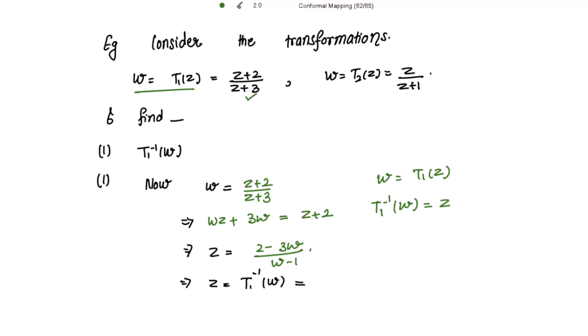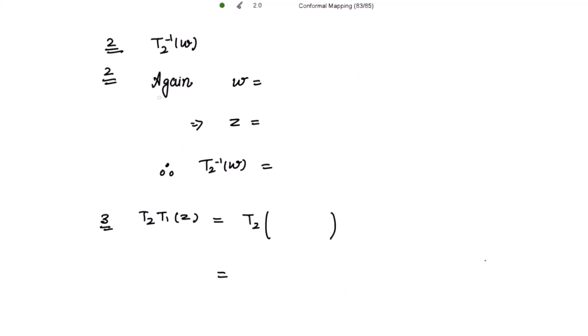We have just calculated z as (2 - 3w) over (w - 1), so t1 inverse(w) is equal to (2 - 3w) over (w - 1). This is how we calculate the inverse of t1.